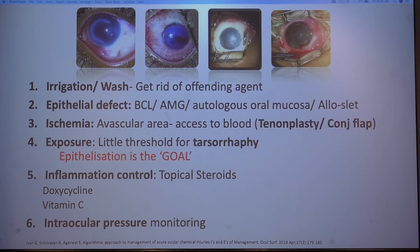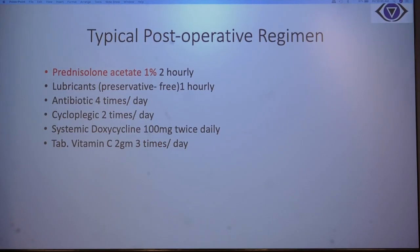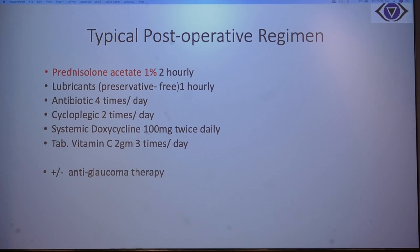If there is an area of melt, amniotic membrane graft may also be applied. Supplementation includes oral doxycycline as well as ascorbate. Simultaneously, monitor intraocular pressure, which may be elevated due to direct chemical damage to the trabecular meshwork or from steroid use, potentially requiring anti-glaucoma therapy. An ominous sign is hypotony due to anterior segment ischemia, which may later lead to phthisis bulbi. The typical post-operative regimen includes topical steroid given frequently, preservative-free lubricants, a broad-spectrum epithelium-friendly antibiotic, topical cycloplegics, oral doxycycline, and vitamin C.